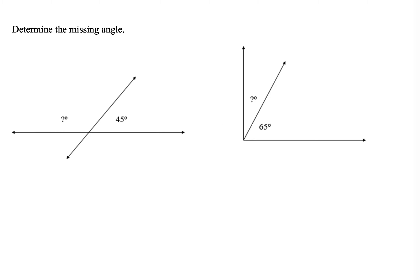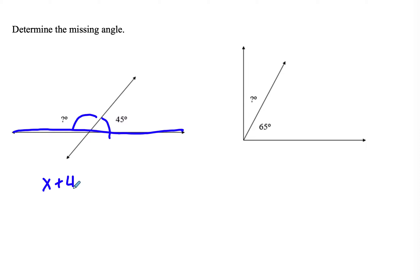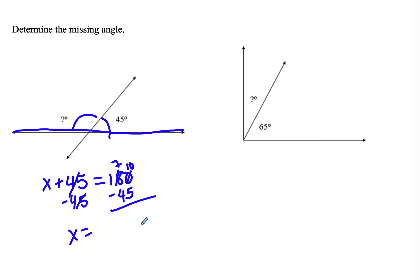Now let's use some of that information to find missing angles. On this first one, a lot of people think these are vertical because we see two crisscrossing lines. But actually these are adjacent supplementary — if you ignore the bottom part, these two are on the same straight line. So I'll do X plus 45 equals 180. I subtract 45 from both sides and get X equals 135 degrees.